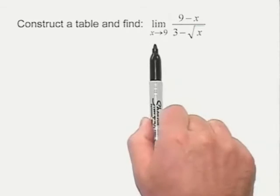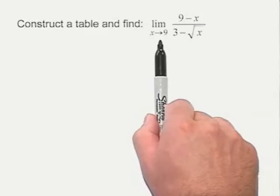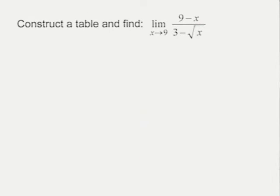Now, what this means is we want to evaluate X numbers that are approaching nine from the left, meaning 8.9 and that kind of number, and then also from the right.